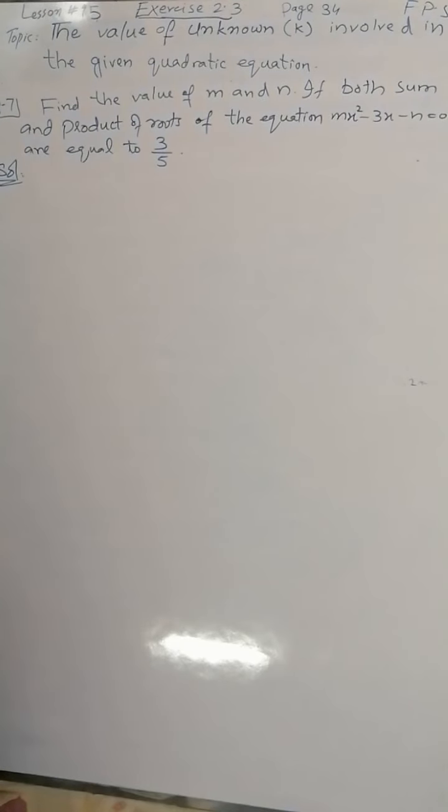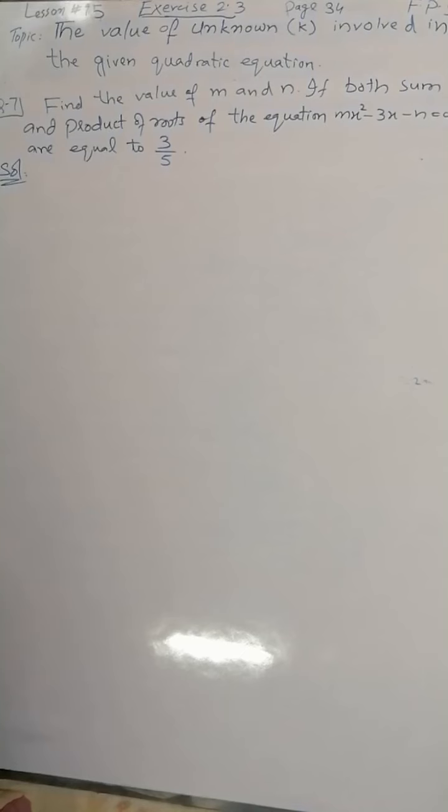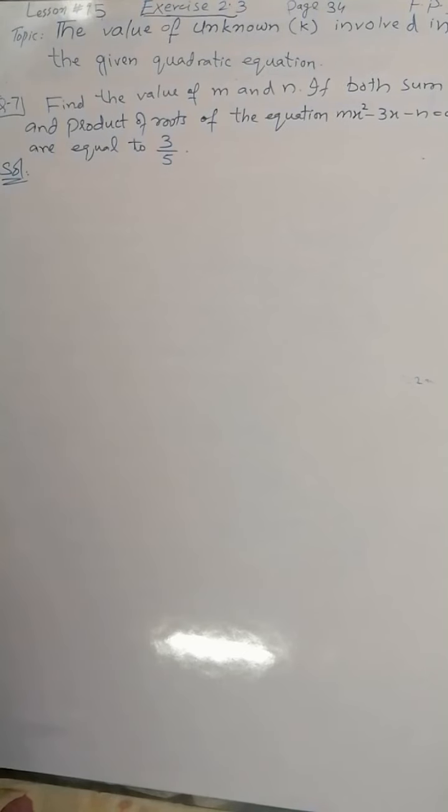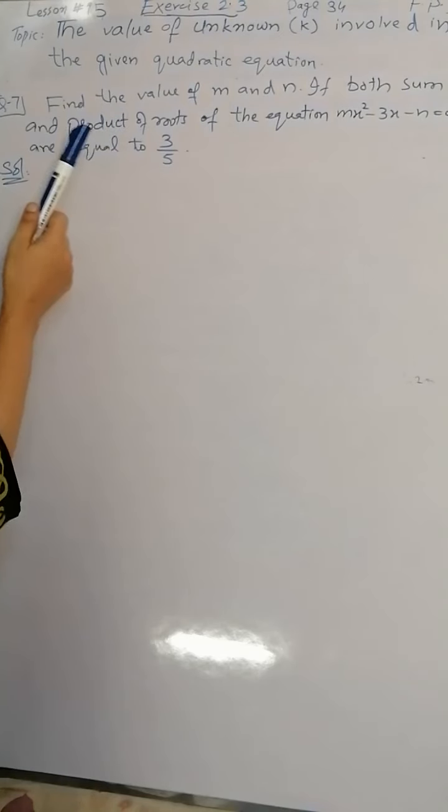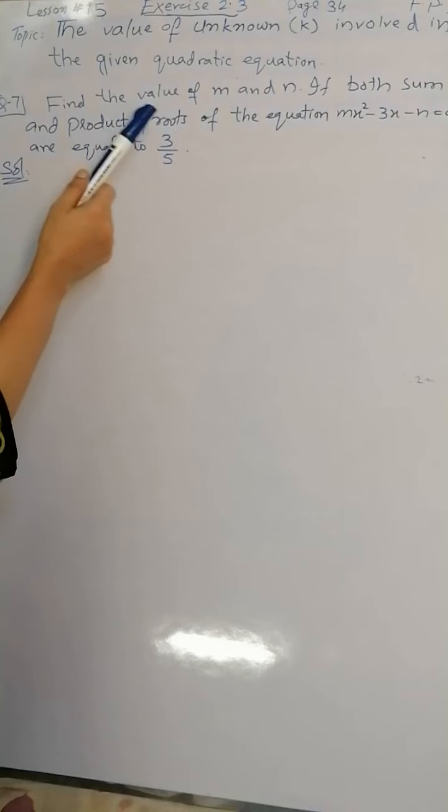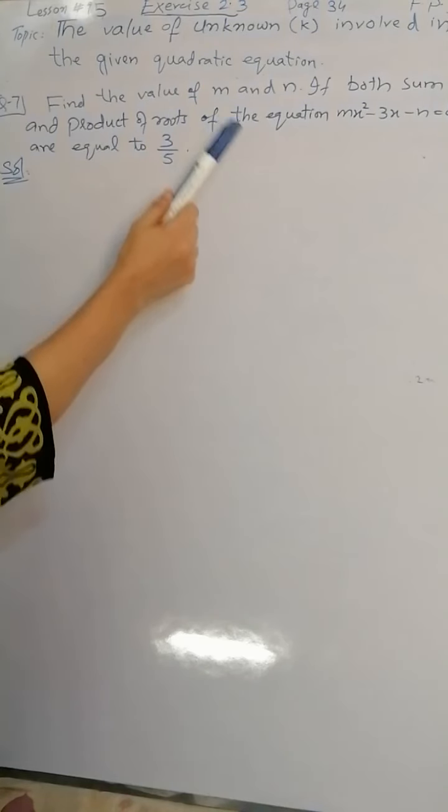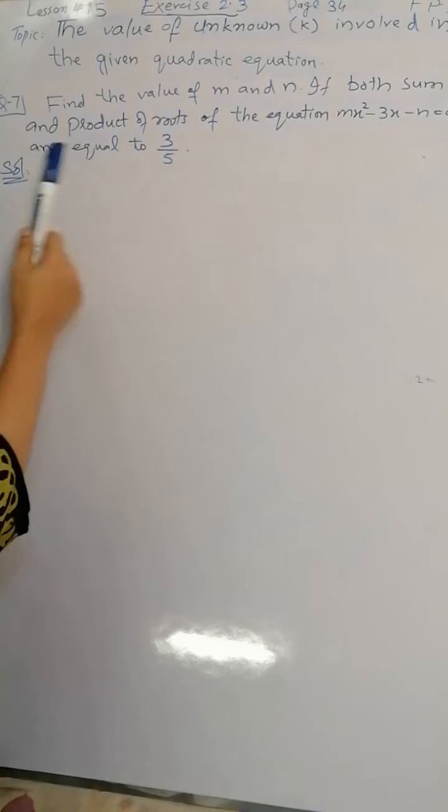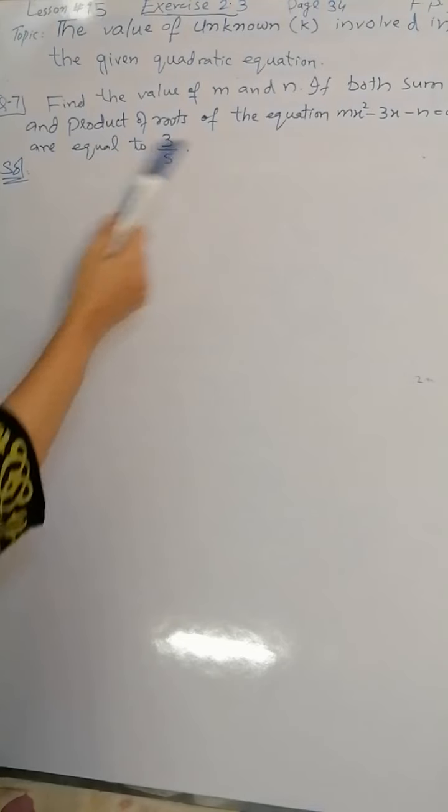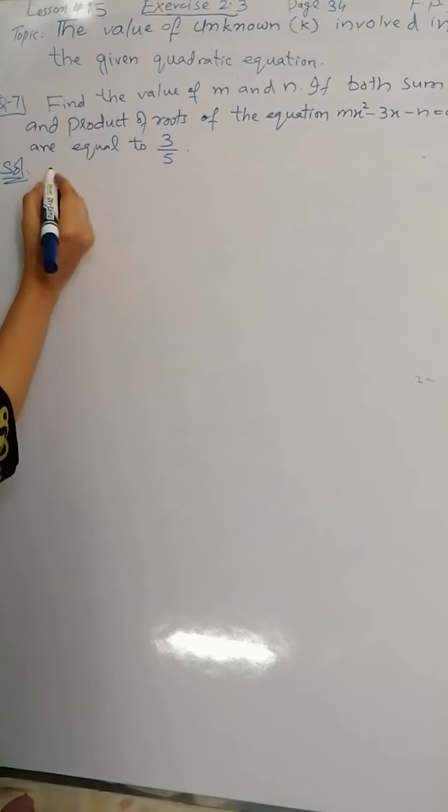Bismillahirrahmanirrahim, Assalamu alaikum students. Welcome to Forak Public School e-learning, grade 10 subject mathematics. I am your maths teacher. Here is lesson 15 from exercise 2.3 on the value of unknown k involved in the given quadratic equation. Question number 7: Find the value of m and n if both sum and product of roots of the given equation are equal to 3/5.